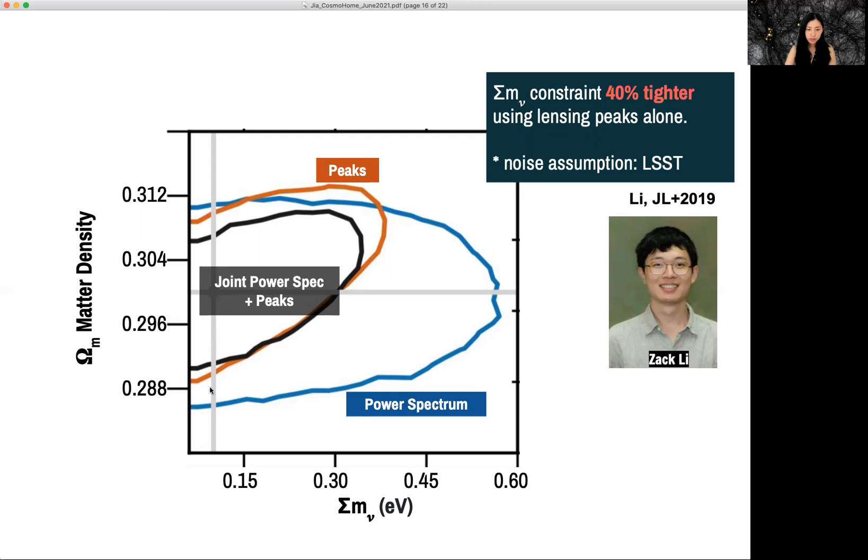Therefore, when you join peaks and the power spectrum, you get a combined constraint that's very similar to the peaks alone. So we find that using peak counts, we can potentially improve the constraint on neutrino mass with LSST with lensing by 40%.